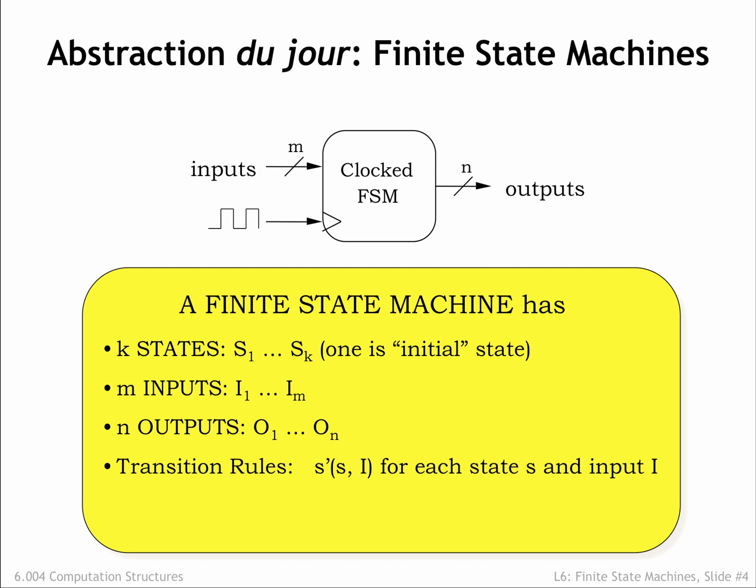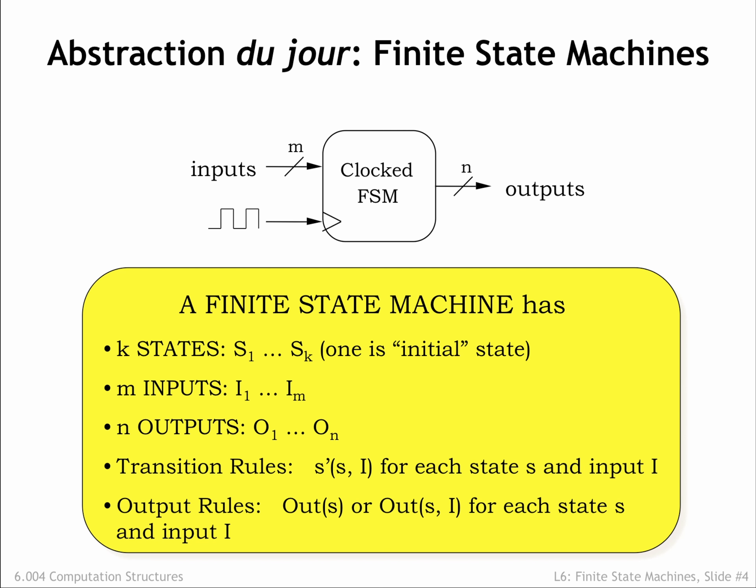There are a set of transition rules specifying how the next state S' is determined from the current state S and the inputs I. The specification must be complete, enumerating S' for every possible combination of S and I. Finally, there's a specification for how the output values should be determined. The FSM design is often a bit simpler if the outputs are strictly a function of the current state S, but in general the outputs can be a function of both S and the current inputs. Now that we have our abstraction in place, let's see how to use it to design our combination lock.